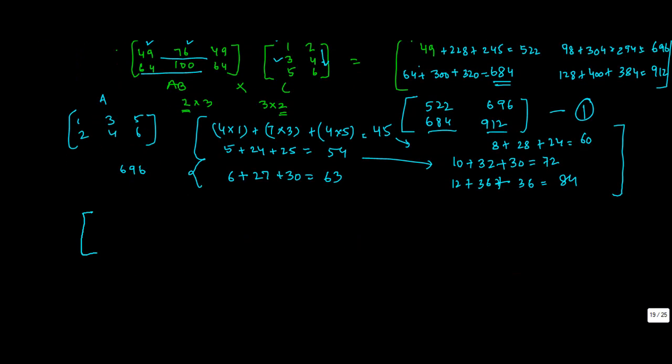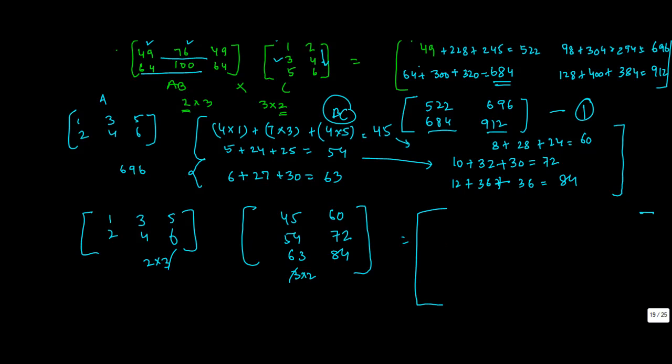So, you've got A, which is 1, 2, 3, 4, 5, and 6, and you've got B, C, which is 45, 54, 63, 60, 72, and 84. This is 2 by 3, this is 3 by 2. Multiplication possible. And the resulting matrix has to be 2 by 2. First row, first column. 1 into 45, 45, plus 54 into 3, 162, plus 63 into 5, 315. If you do the sum total, you get 522, which is the first value here.